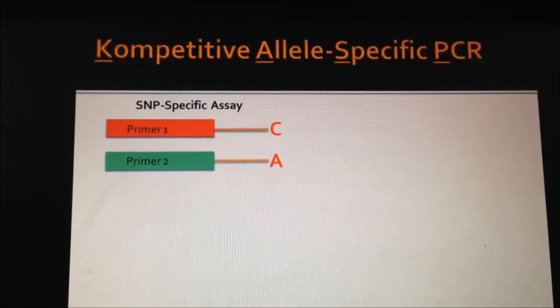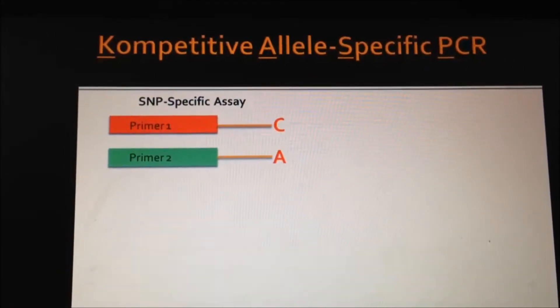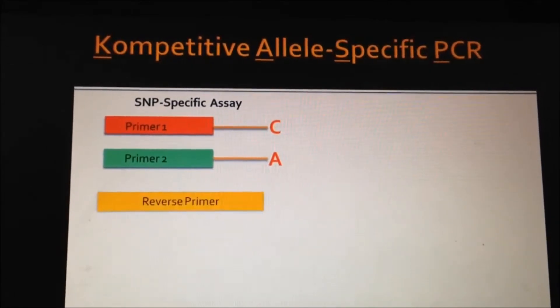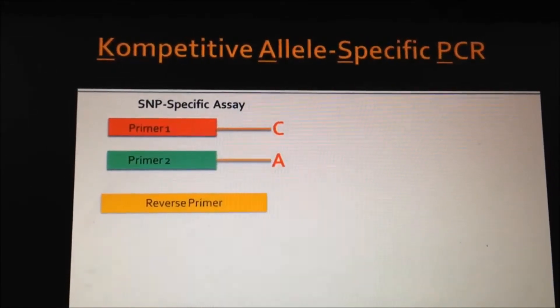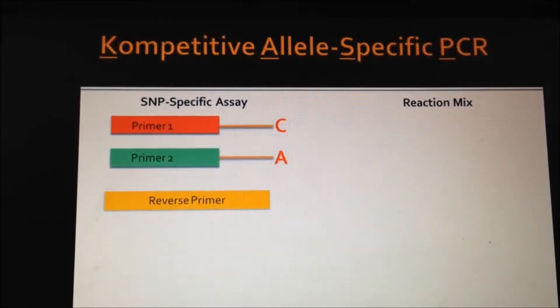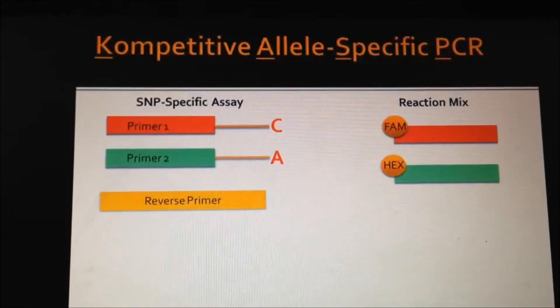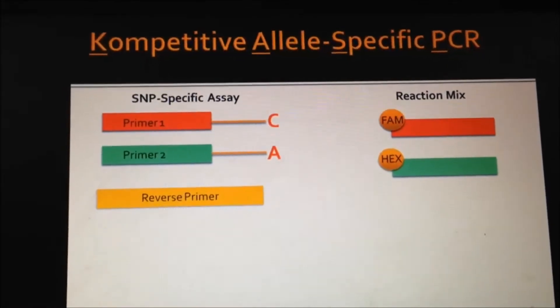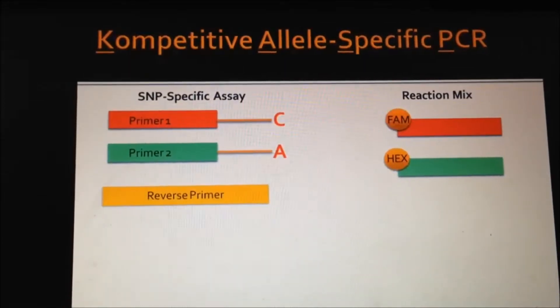KASP stands for competitive allele-specific PCR. This system has two components. The first is the SNP-specific assay, which includes a forward primer for each allele. These forward primers have a 5' unlabeled end and the SNP in the terminal 3' position. The SNP-specific assay component also includes a common reverse primer.